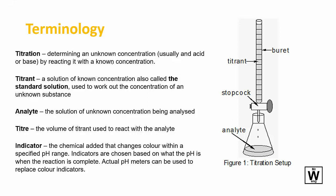So titration itself is just finding out an unknown concentration using a known concentration of something. That known concentration is called a standard solution — it's done up very accurately — and it's sometimes called a titrant. The stuff you're analysing is called the analyte. The actual volume of the standard solution used to react completely with the analyte is called the titre. There's usually a colour change from an indicator, and that indicator is based on pH — the colour changes based on various different pH ranges.